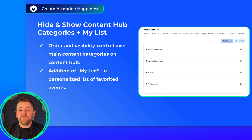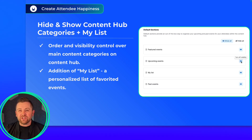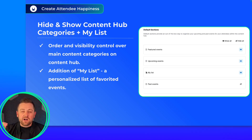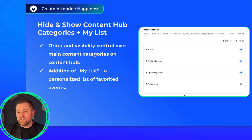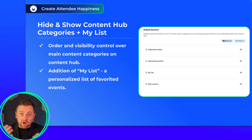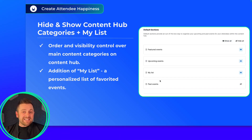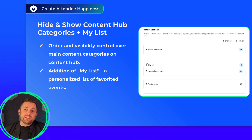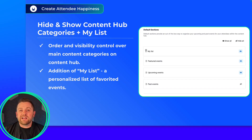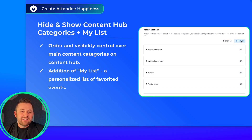A quick update for the content hub: event hosts can now control which sections of their hub are seen first with visibility toggles and reordering. This is all found in the content hub section of your hub. In addition, we've added a My List feature, which allows your hub attendees to favorite their own events and keep them right at the top for their repeat visits.